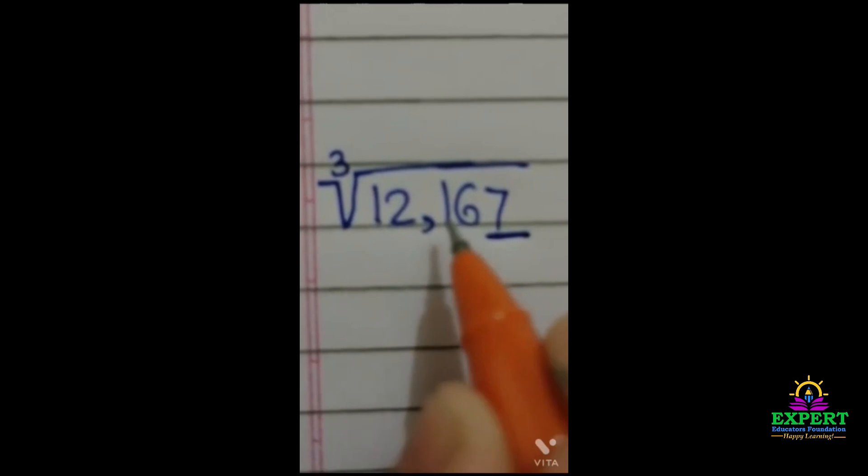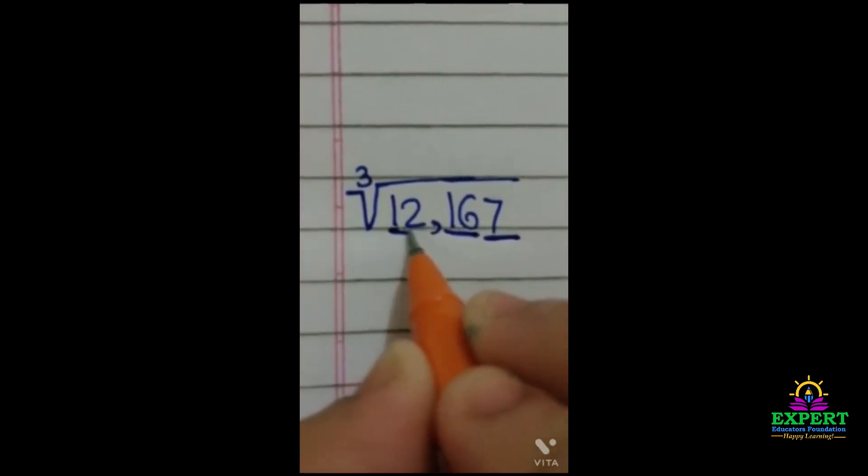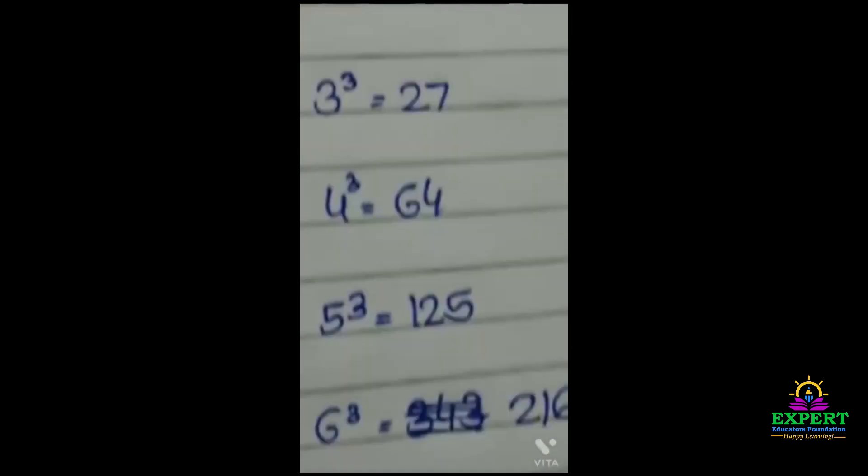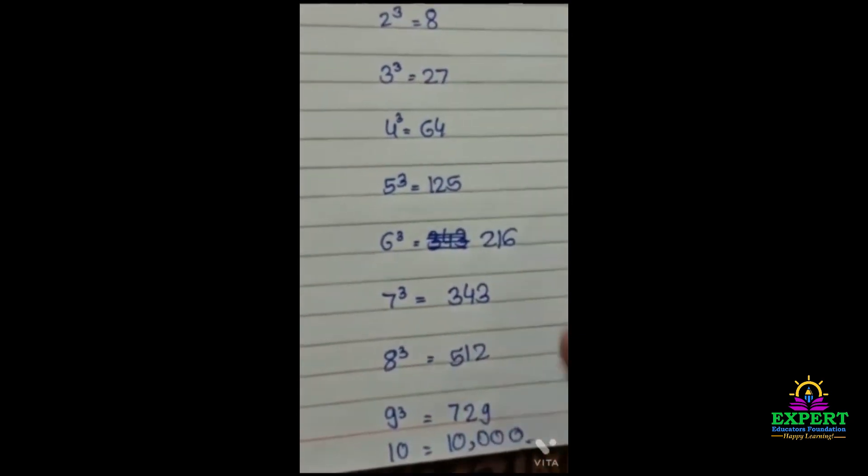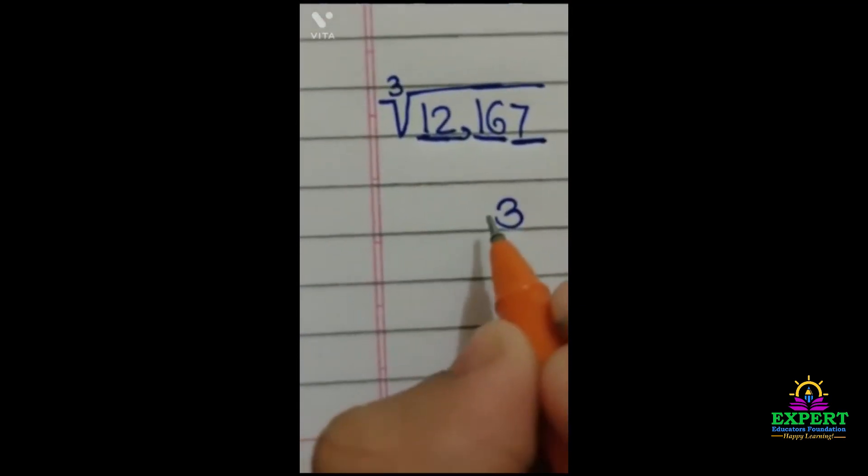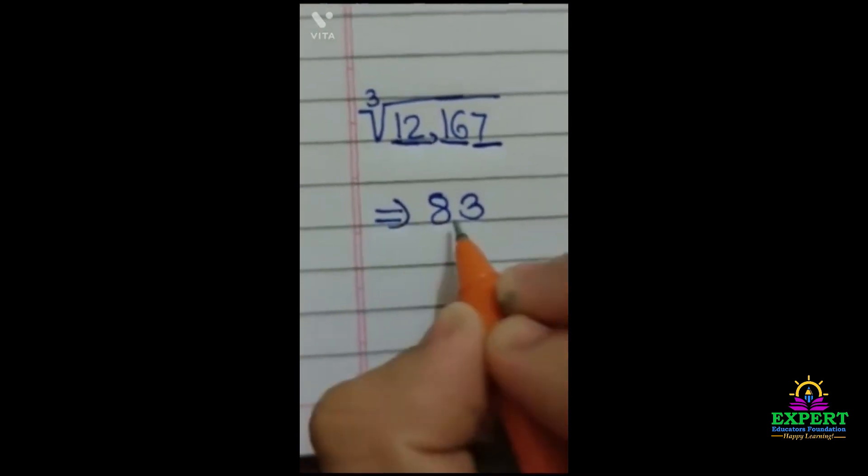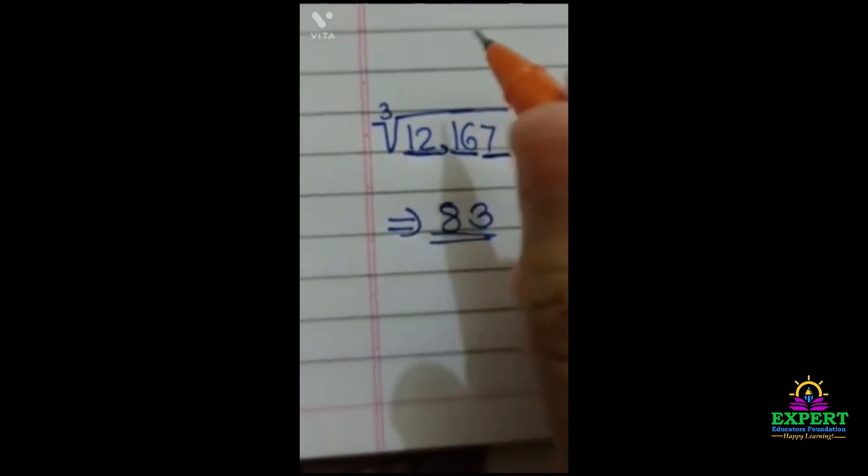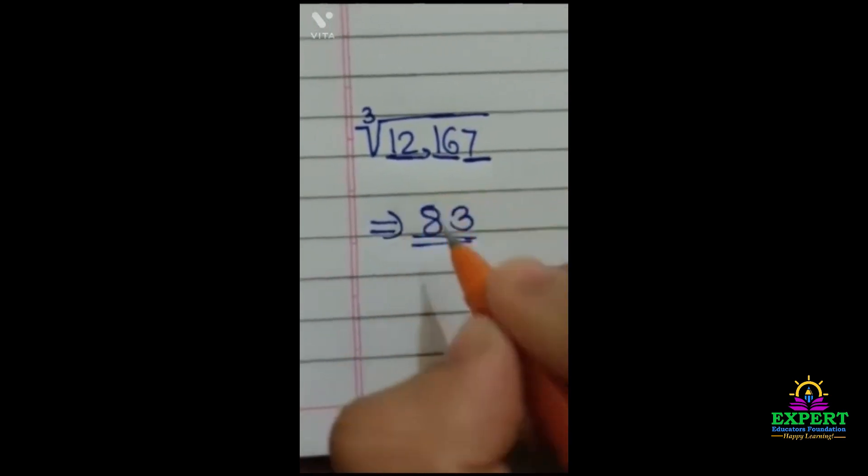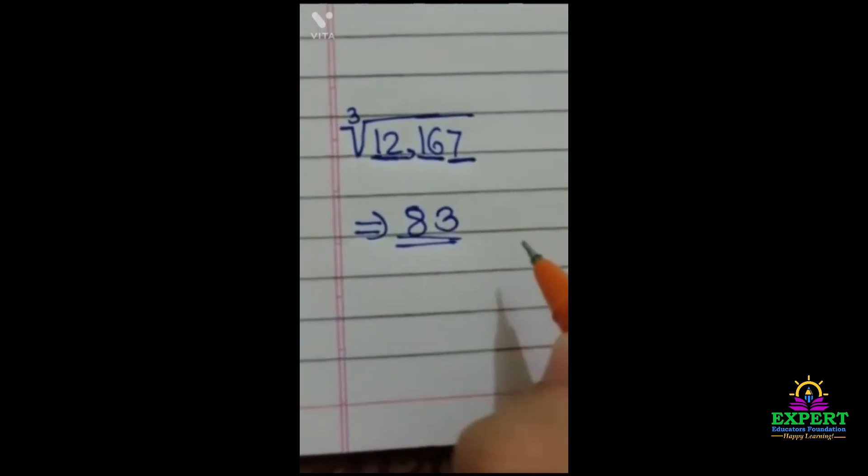Now forget about these two numbers and let's take this 12. Now here 12 is not mentioned, so we will take the smaller number, and the smaller number is 8. So here 8 will come. See, our answer is 83. This means the cube root of 12,167 is 83.